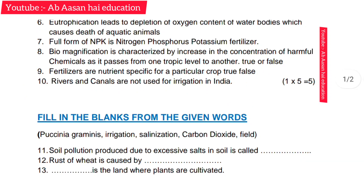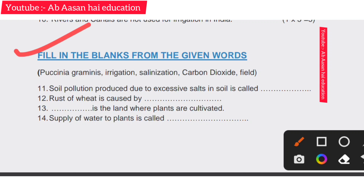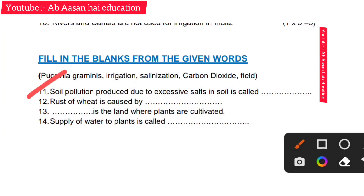Now fill in the blanks — options are given. Eleventh: soil pollution produced due to excessive salt in the soil is called salinization. So the right answer is salinization.